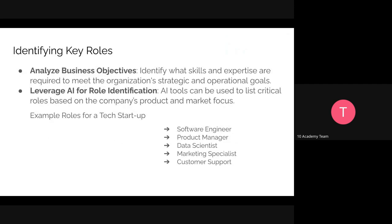For identifying key roles, first we need to analyze business objectives. We need to identify what skills and expertise are required to meet the organization's strategic and operational goals. Before identifying key roles, we need to understand which skills are needed and what specific expertise is required — in other words, the skill gaps we need to fill in that specific organization.